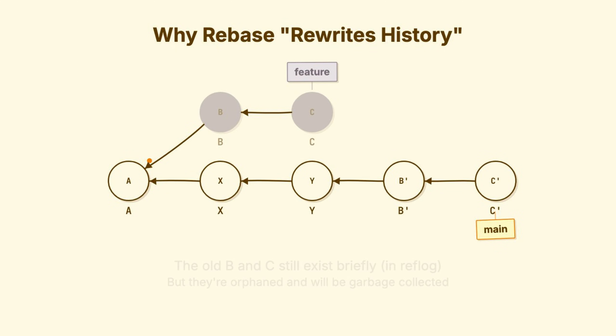The old B and C? Orphaned. They'll eventually be garbage collected. This is what rebasing actually does.